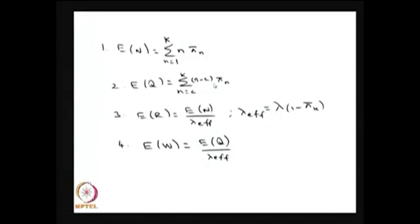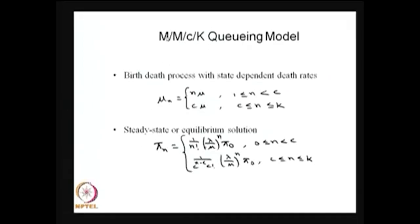I have not drawn the state transition diagram for MMCK, but you can visualize it as a combination of the MM1N and MMC models. Since it is a finite capacity model, it is easy to obtain the steady-state equilibrium solution.